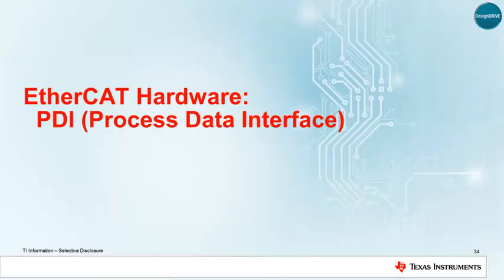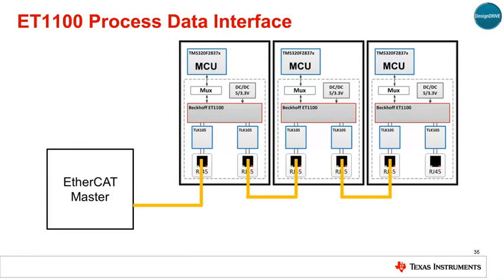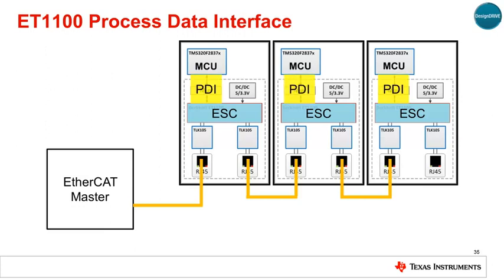The previous slide showed the basic building blocks of an EtherCAT slave. Next, we'll cover the PDI, or Process Data Interface, which is the connection between the EtherCAT Slave Controller and an MCU. In an EtherCAT system, the ESC is responsible for data link operations such as receiving EtherCAT frames, parsing them, and passing data through the PDI to an MCU running the slave stack software.